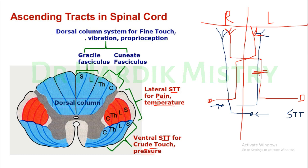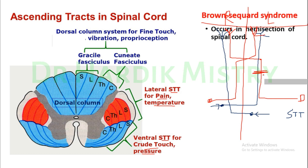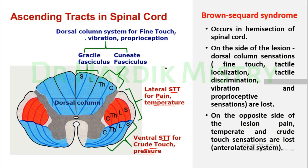...it will cut the fibers carrying sensory information from the right side via the spinothalamic tract, and from the same side via the dorsal column system. This is what is known as Brown-Séquard syndrome. Brown-Séquard syndrome occurs with hemisection of the spinal cord — when either the right or left side of the spinal cord is damaged.